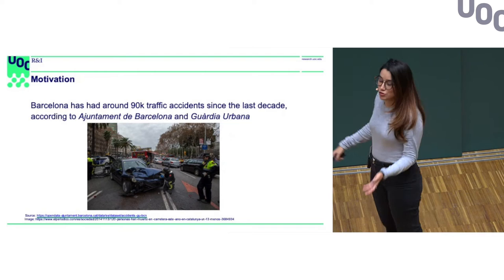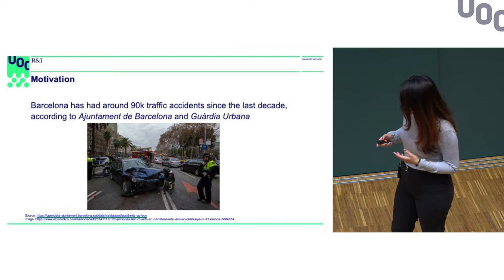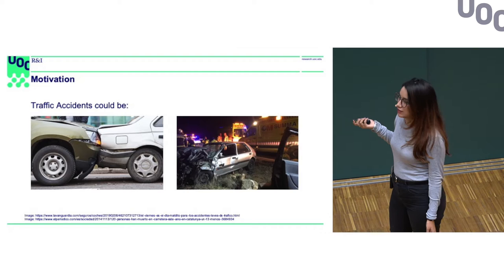Do you know that Barcelona has had 90,000 traffic accidents in the last 10 years? If you do the calculation, it's almost 20 accidents per day between pedestrians and cars. These accidents could be slight — only crashes where no people are hurt — or huge fatalities.